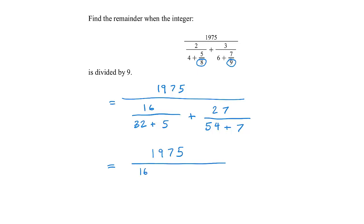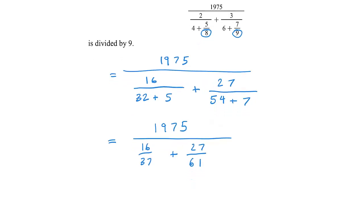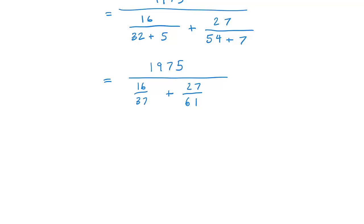We would get 16 divided by 37 plus 27 divided by 61. From here, we would like to add those fractions together in the denominator. We still have 1975 on the top.